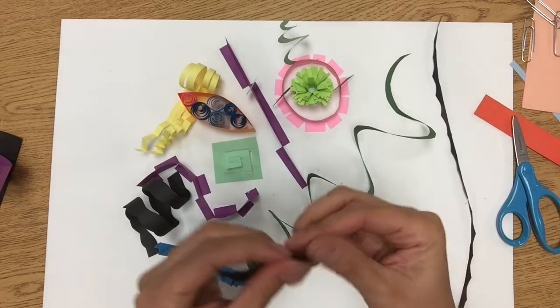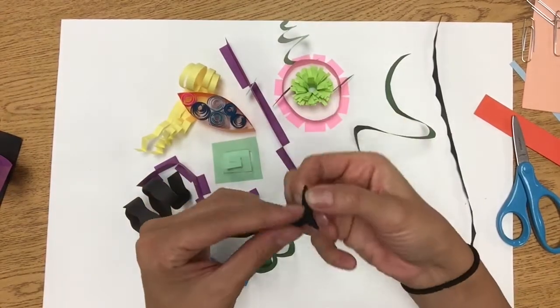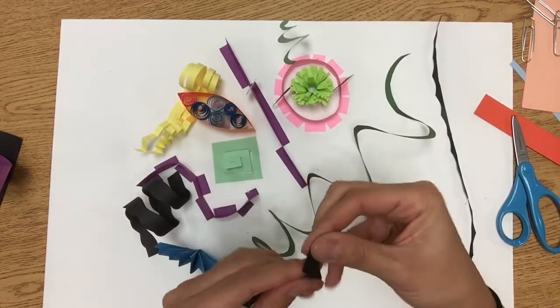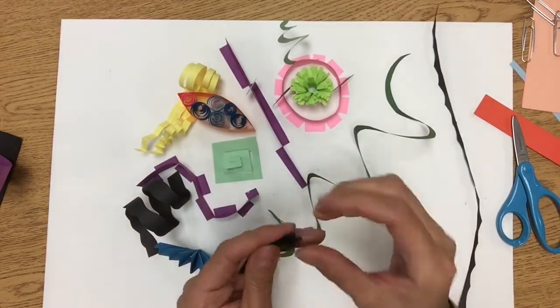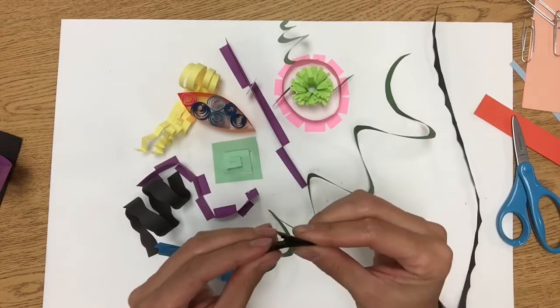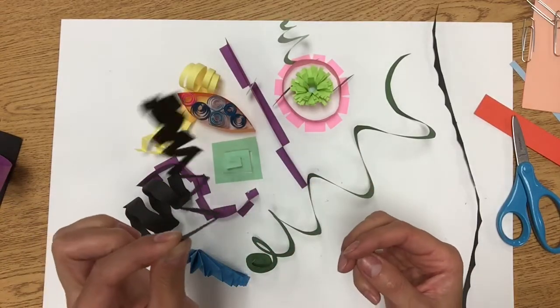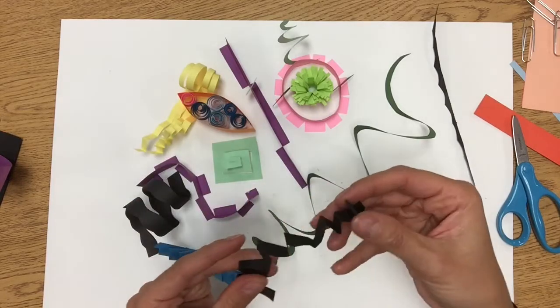I'm going to fold this one as a zigzag this was one of my scraps from the black piece that I cut and now since it's thinner it's going to be a little flimsier has a little more movement to it.